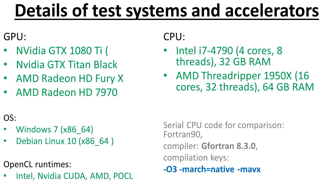Here I show the details of test systems and accelerators: two NVIDIA accelerators, two AMD accelerators, two CPUs — Intel and AMD — two operating systems, Windows 7 and Debian Linux, and several runtimes. I also show the compiler keys for the serial Fortran version.